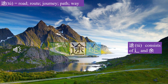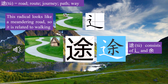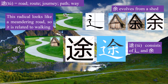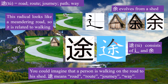Character 途 (Tú) consists of two components. The radical 彳 (Fú) evolves from climbing steps up a mound, and 余 (Yú) evolves from a shed. You could imagine that a person is walking on the road to his shed. 途 means road, route, journey, way.